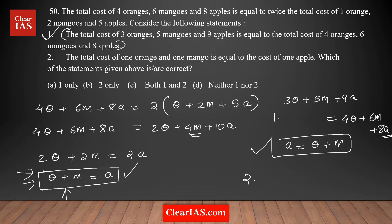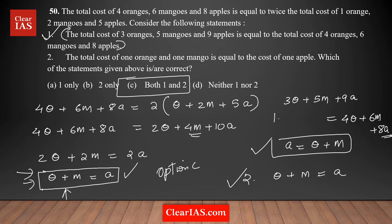What about Statement 2? Statement 2 is a straightforward statement: the total cost of an orange plus a mango is equal to the cost of an apple. This is exactly what we got by simplifying the question step, so Statement 2 is also correct. Therefore, the answer has to be option C — both Statement 1 and Statement 2 are correct.